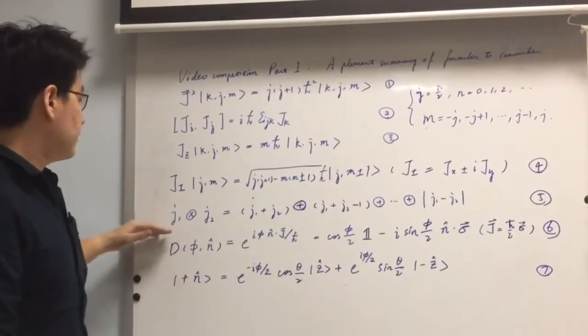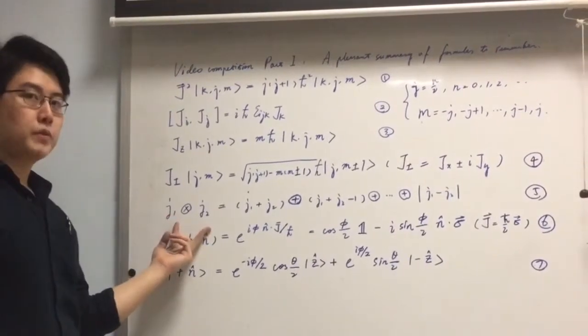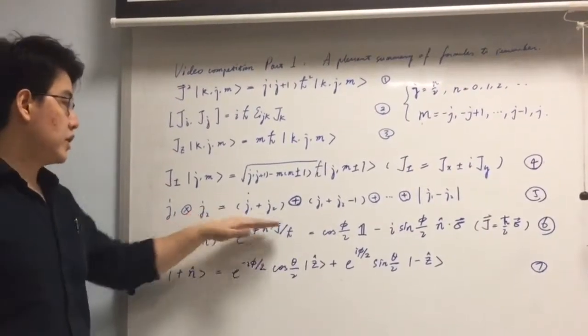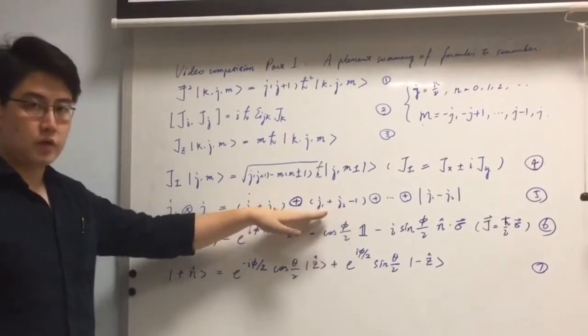The fifth formula shows how the tensor products of two spins look like in the notation of group theory.